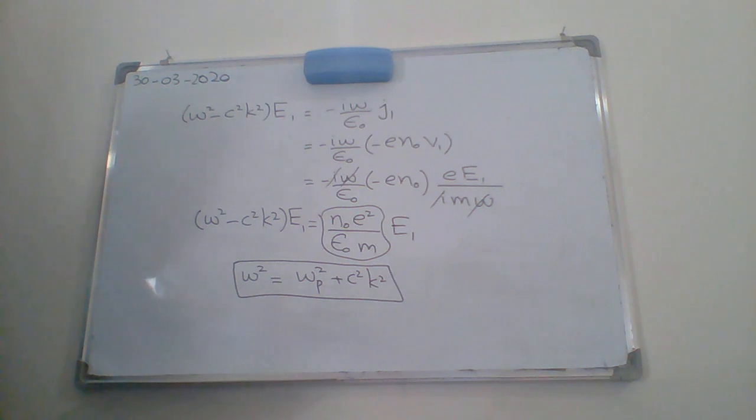Our expression will be omega squared equals omega P squared plus C squared K squared. This is the expression for the electromagnetic waves in the plasma, or you can say the dispersion relation for electromagnetic waves propagating in a plasma with B naught equals zero.